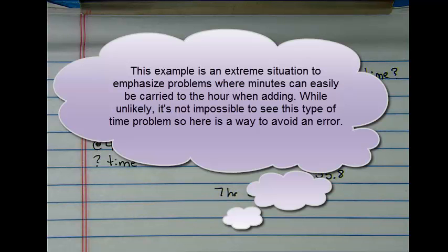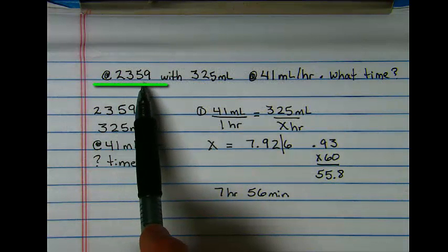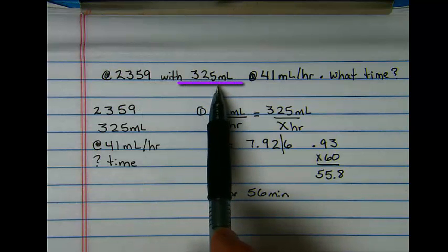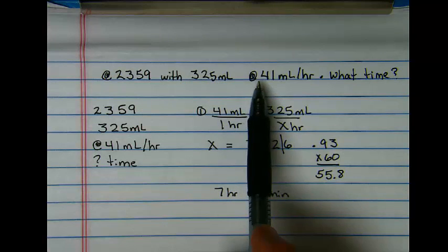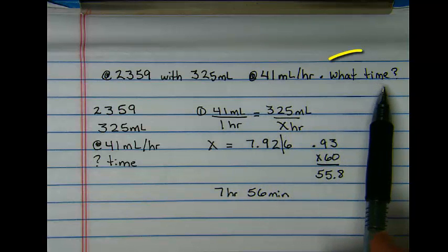I've sort of made up a problem that you won't likely see, but it will give you the most extreme example. If at 2359 hours you have 325 milliliters remaining and infusing at 41 milliliters an hour, what time will your next bag be needed?